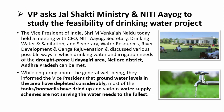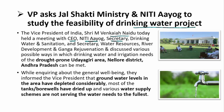Our first news: the Vice President has asked the Jal Shakti Ministry and NITI Aayog to study the feasibility of a drinking water project, particularly in the Udhaigiri area of Nellore district, Andhra Pradesh. Vice President Shri M. Venkaiah Naidu held a meeting with the CEO of NITI Aayog and secretaries of Drinking Water and Sanitation, and Water Resources, River Development and Ganga Rejuvenation to discuss ways to meet drinking water and irrigation needs of the drought-prone Udhaigiri area.